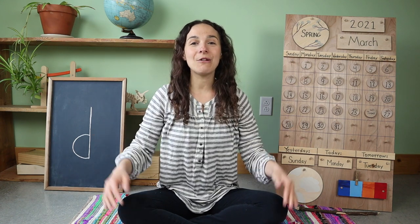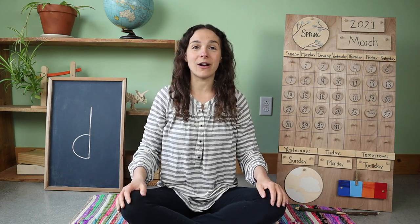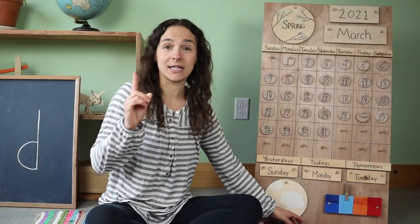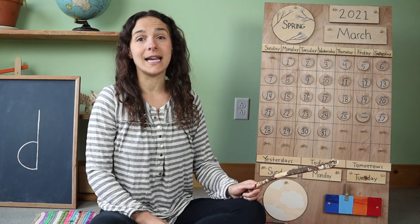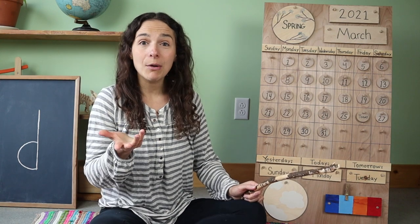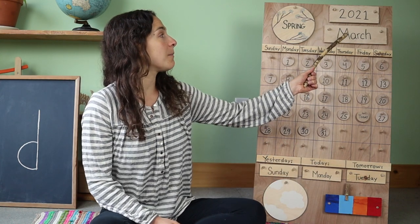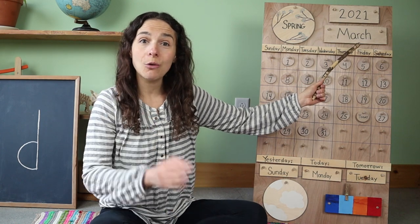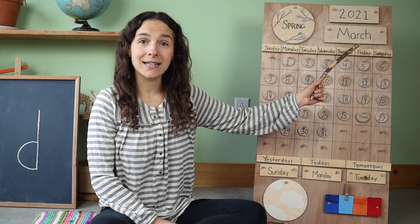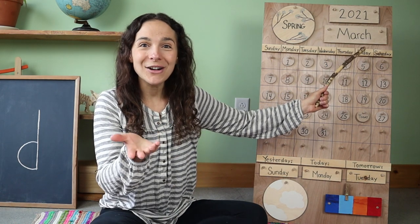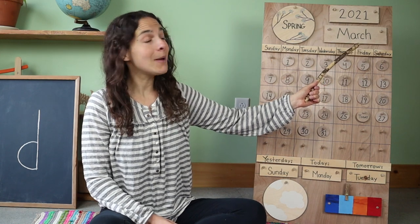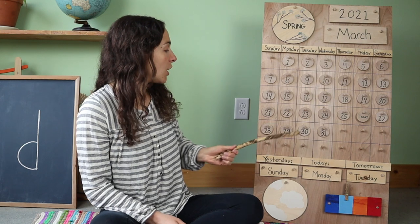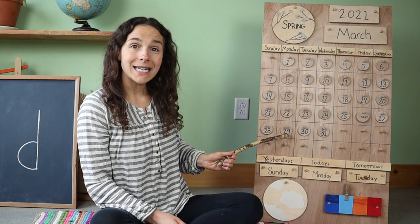I hope that you all are having a wonderful day so far. Let's get started with circle time. The first thing that we do is begin with the date, and when we say the date, we start off with the month right up here at the top. Do you know what the month is? March. That's right, friends. The month is March and today is March 29th.